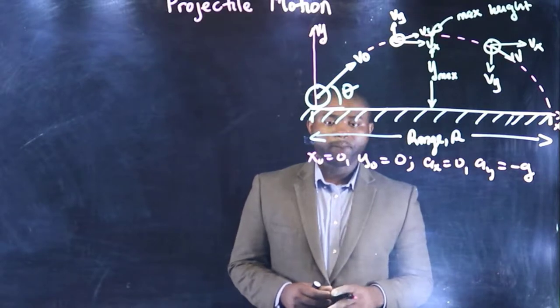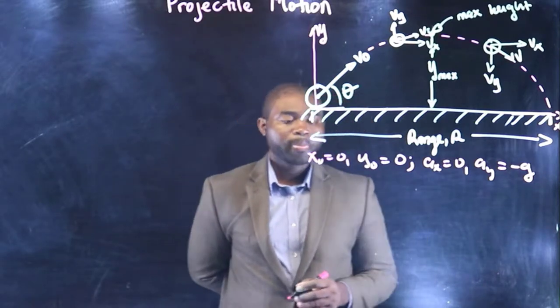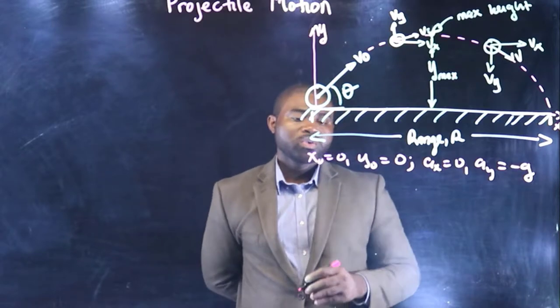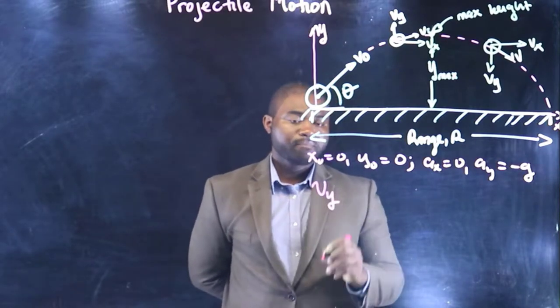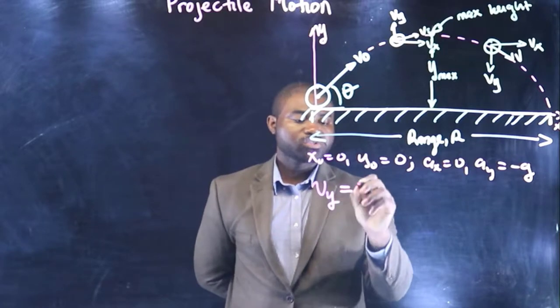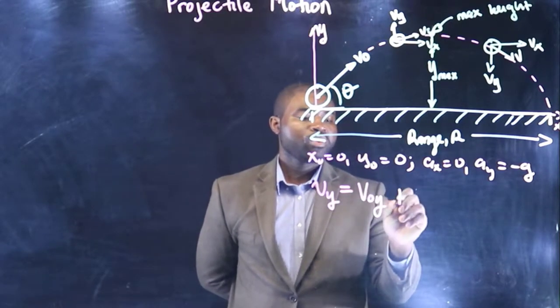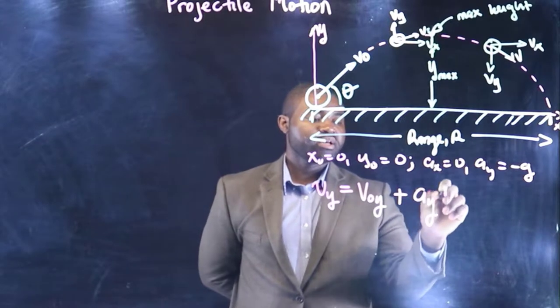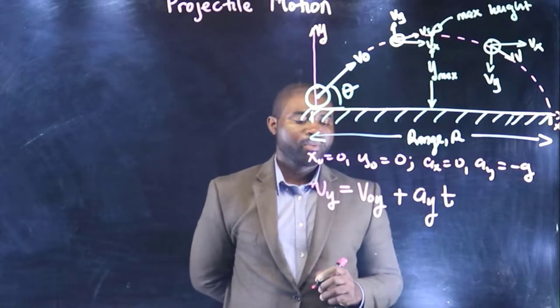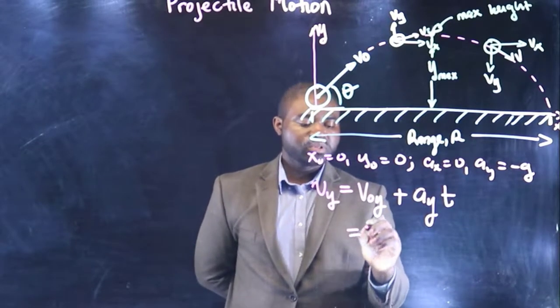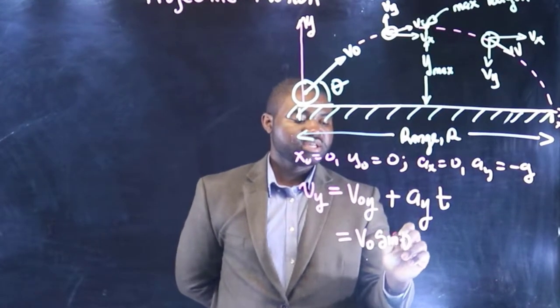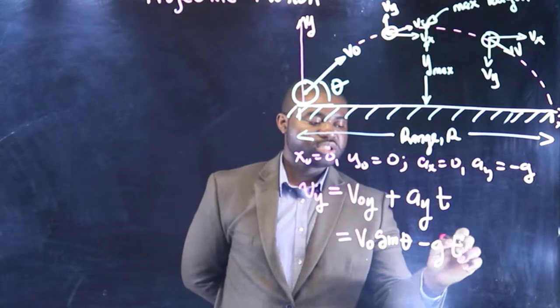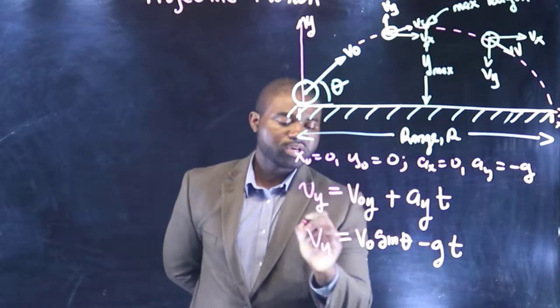Bear with me that vy will be equal to voy plus ay t. This is equal to vo sin theta minus g t. So this is vy.